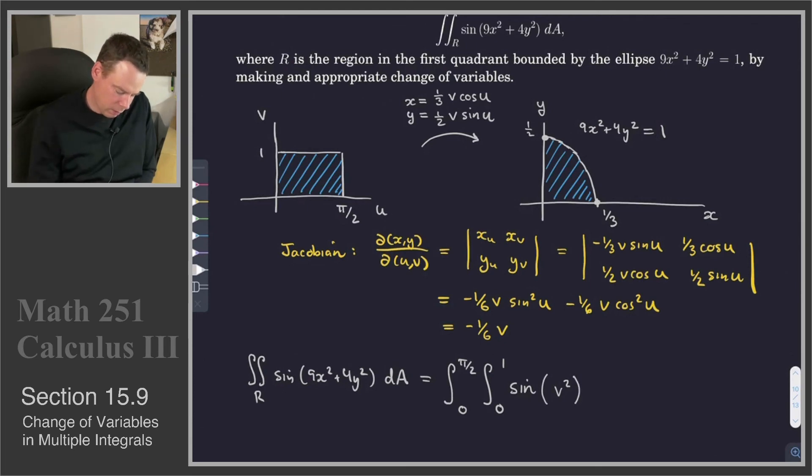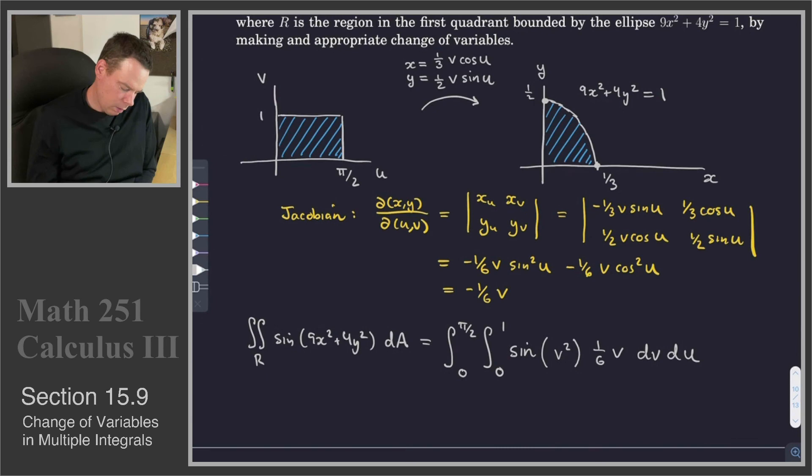And then we get 1/6 v from the absolute value of the Jacobian, and then v is integrated with respect to u first, so that's dv du. And so this becomes then 1/6 the integral. If I look at the integral with respect to u, I see there's no u present, so that's 1/6. There's an extra π/2 that comes out of that outer integral, and we're just left with the inner integral from 0 to 1 of v sin(v²) dv.